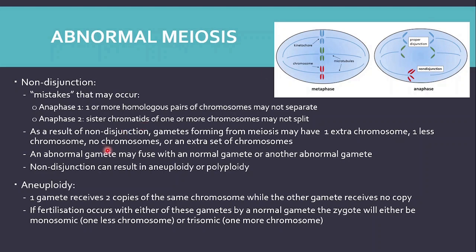This cell will have one extra chromosome and the cell that forms on the other side will have one less chromosome. If division takes place such that all of the blue, green, and red chromatids go into one side, the cell that forms on that side will have all of them, while the cell that forms on the other side will have none. It is possible that an abnormal gamete fuses with a normal gamete or another abnormal gamete — if two opposite abnormal gametes fused, it would result in a normal zygote, but that is very unlikely.